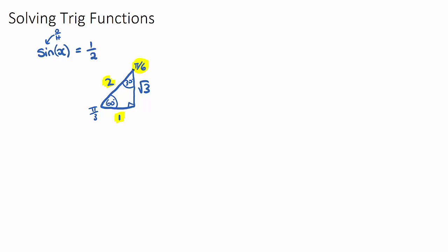Once we have identified which angle it is, I like to call this my tool angle. So tool x — or you could say theta — will be pi on 6. I call it a tool angle because often our question has a given domain, a domain where we need to solve our function for x, and an example would be 0 ≤ x ≤ 2π.